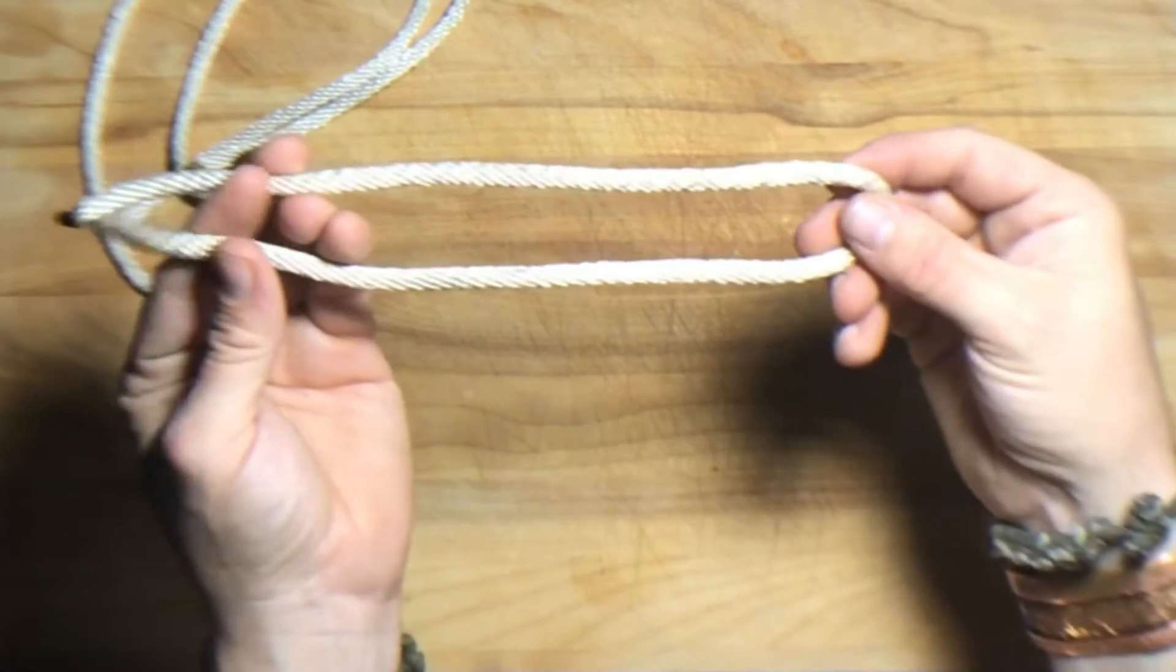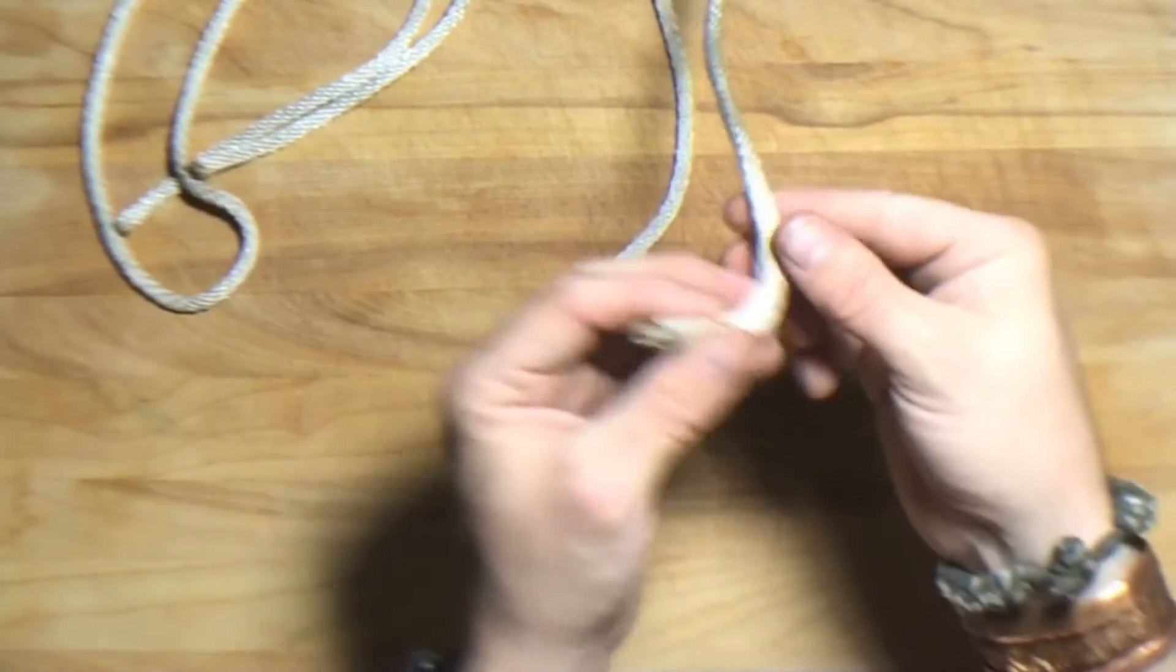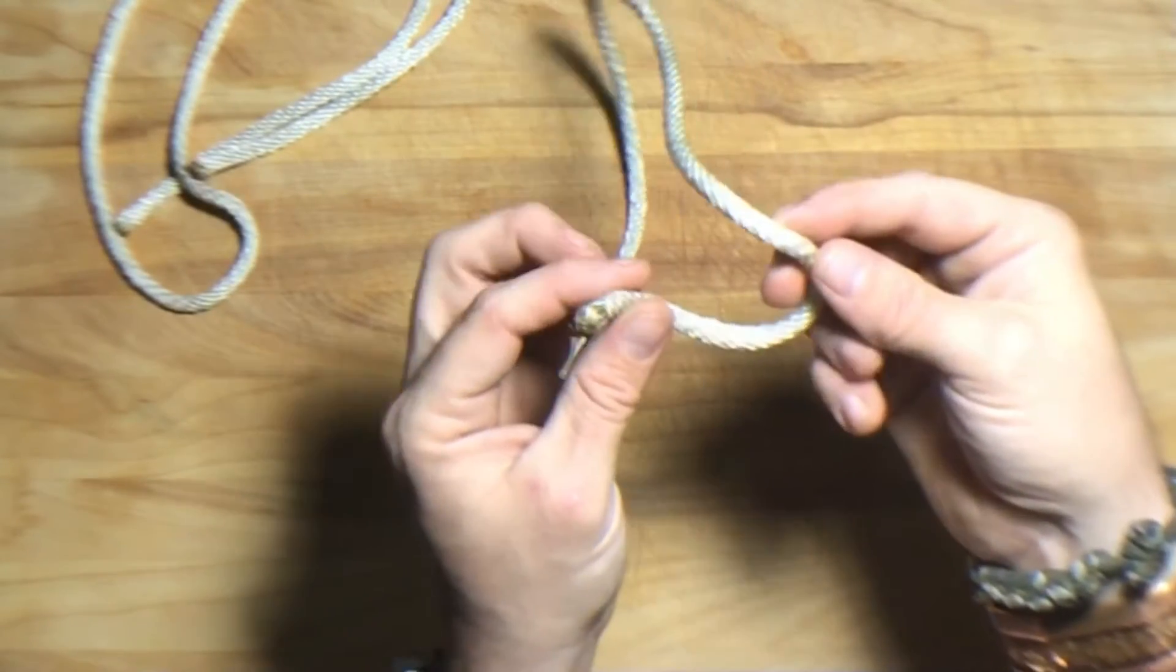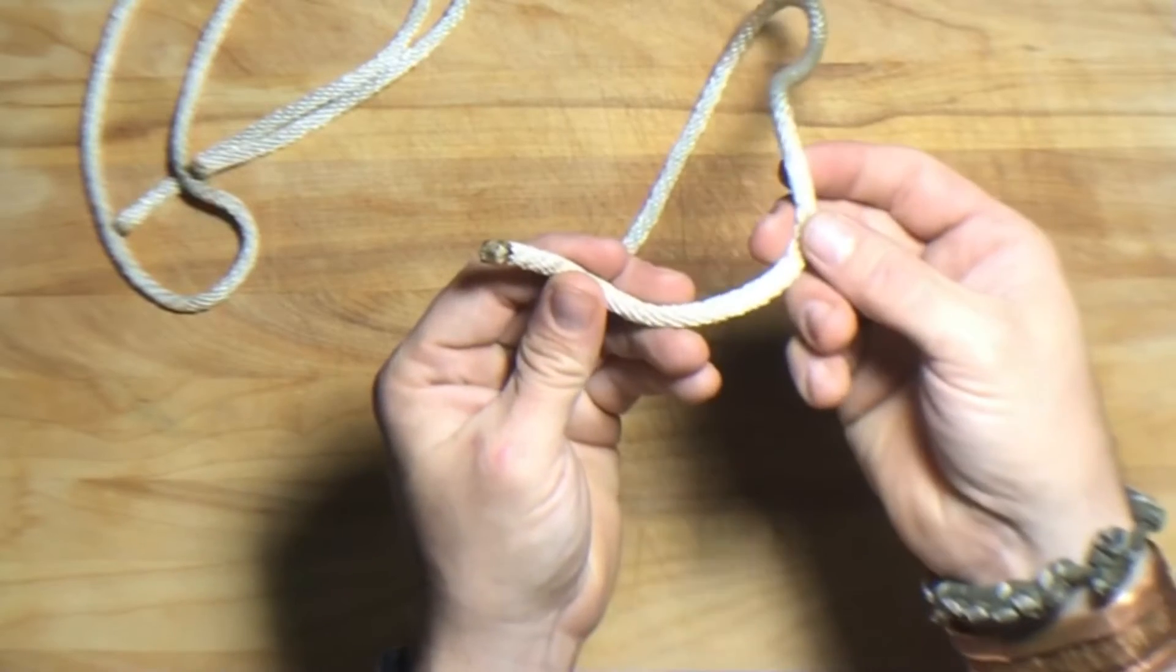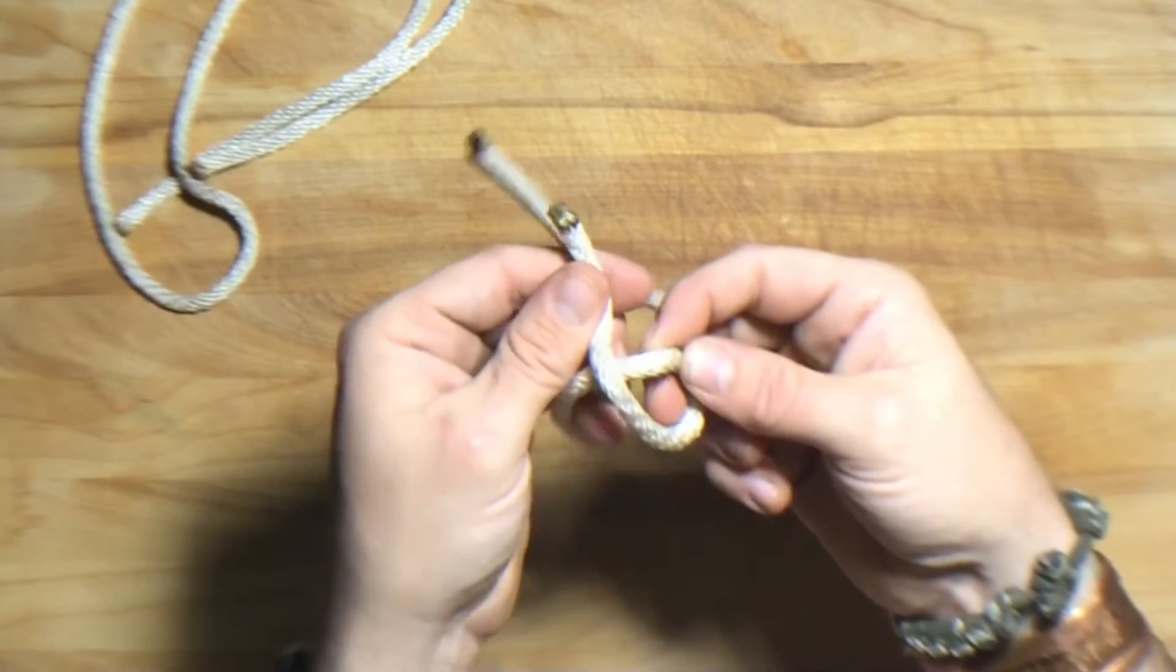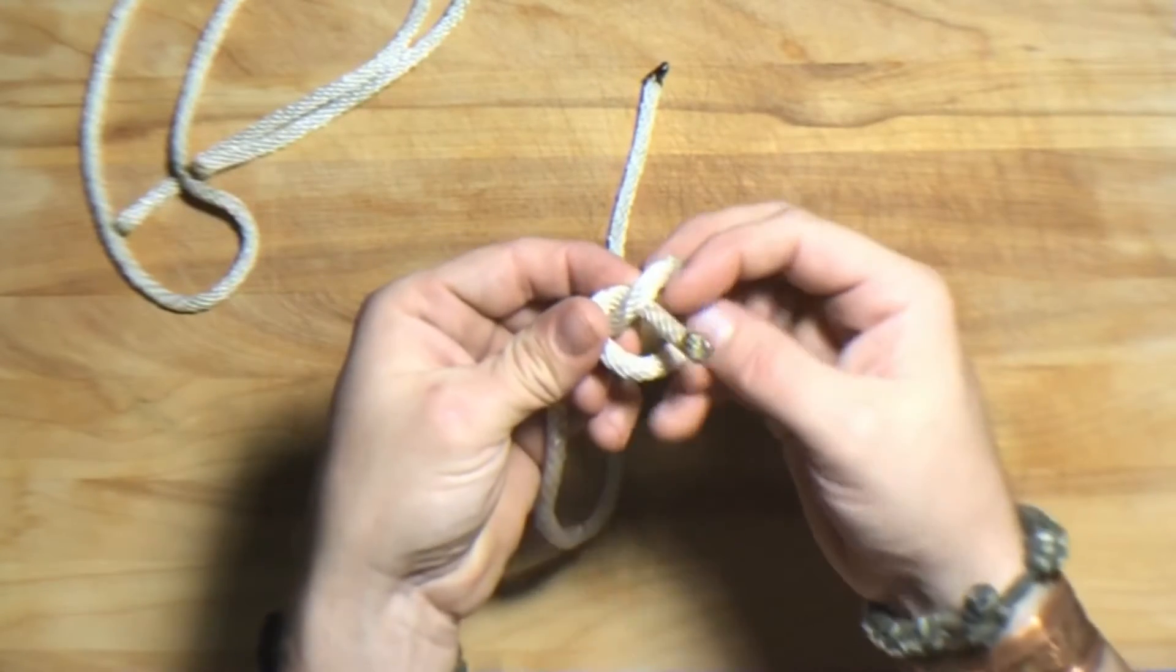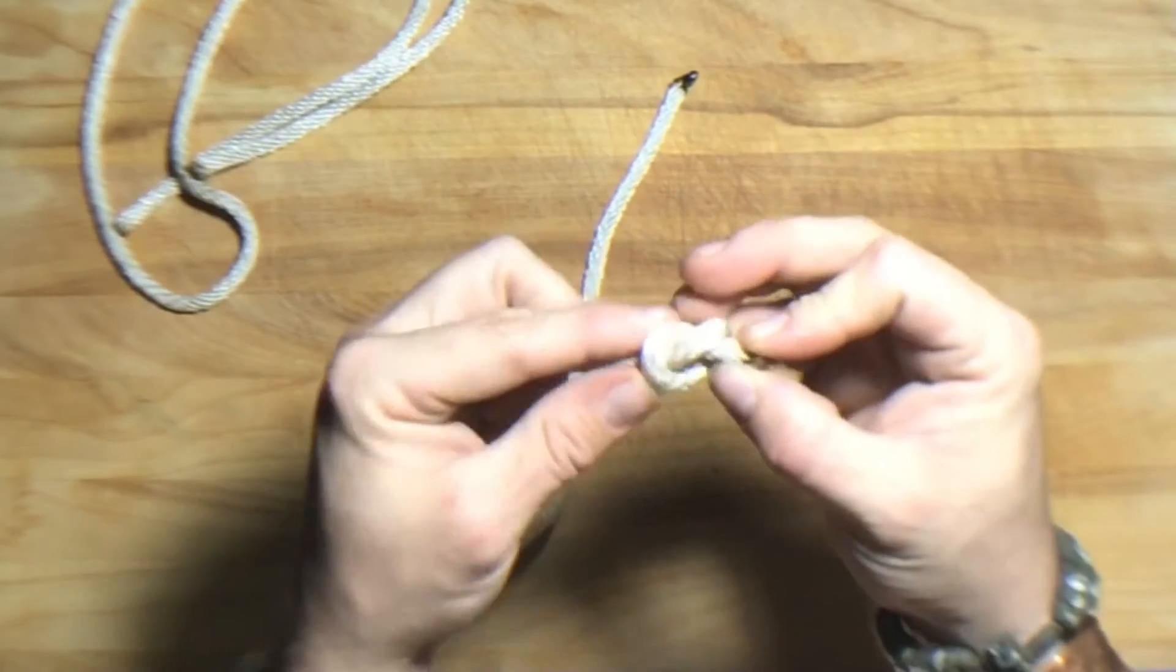This is one of the shorter pieces and the overhand knot is pretty straightforward. You're going to bring it over this other bit of rope and back under, making just a simple little overhand knot.